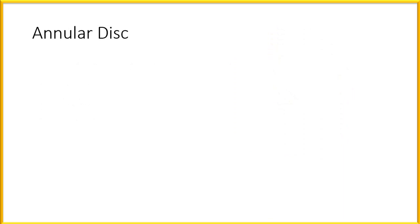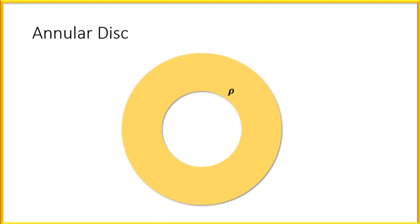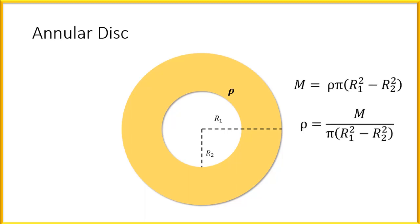An annular disc is a disc which is not complete — it is hollow from inside. Consider an annular disc of mass density rho, with an outer radius r1 and an inner radius r2. The area of the annular disc is just the shaded portion: the area of the larger circle minus the area of the smaller circle. The larger circle has area pi r1 squared, while the smaller circle has area pi r2 squared.